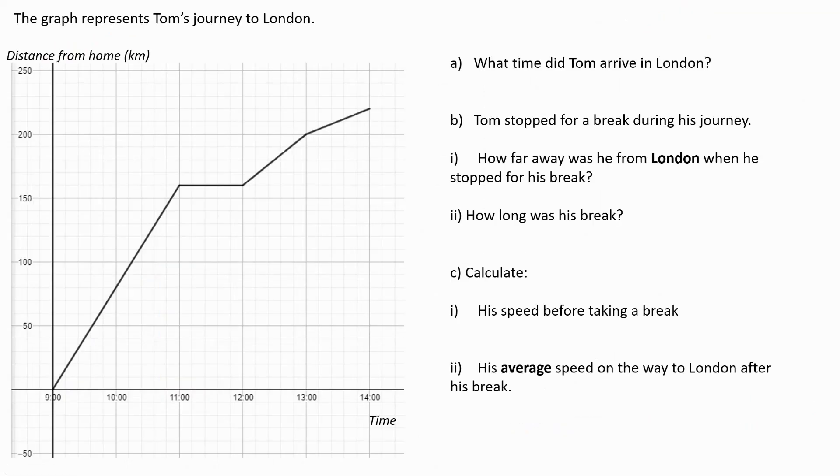Here's a question for you to try. Please pause the video now and have a go at it, and when you're ready to go to the answer, press play. Here are the answers. Firstly, what time did Tom arrive in London? Well, we can see this is his journey to London. It finishes here, so he arrives in London at 14:00, so 2pm.